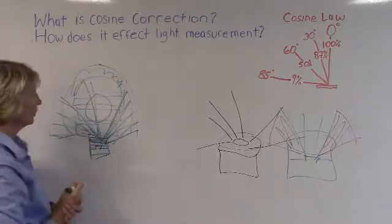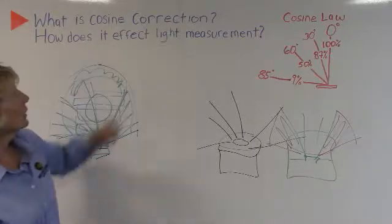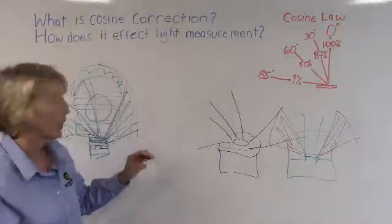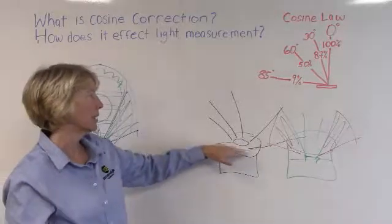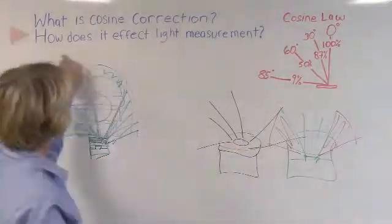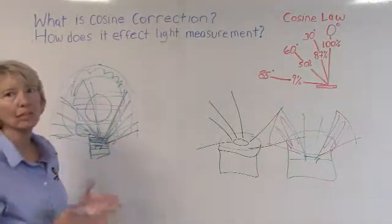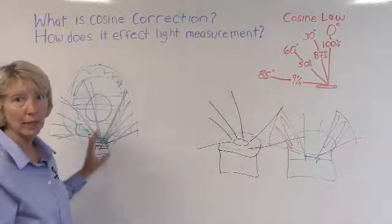So what is cosine correction? It's the ability to take a recessed detector and apply cosine correction by using an input optic as the receiving surface. And what does it affect in your light measurements? It allows you to accurately measure the same amount of light that is received by your product.